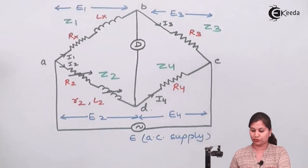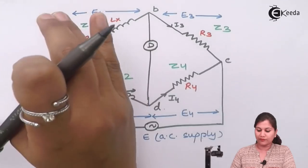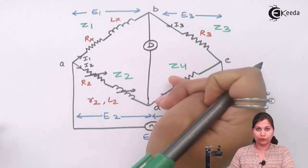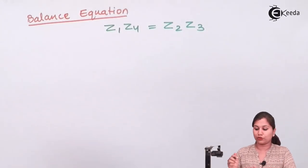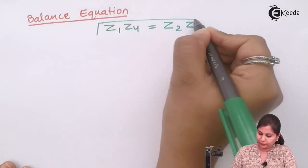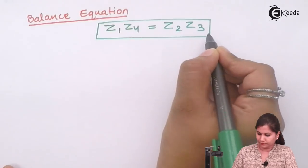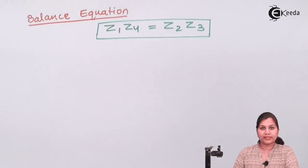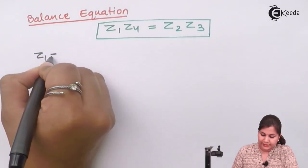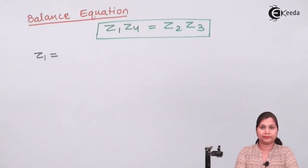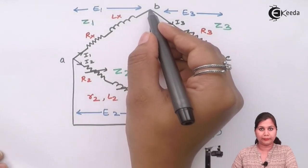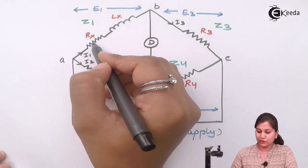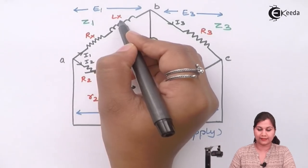So, this arm AB is the first arm with total impedance Z1; Z3 is arm BC, Z2 is arm DA, and Z4 is arm CD. Z1 into Z4 equals Z2 into Z3 — this is the general form of the balance equation. We will first write the values of Z1, Z2, Z3, and Z4, then put those values in the balance equation to find out the value of the unknown inductance.